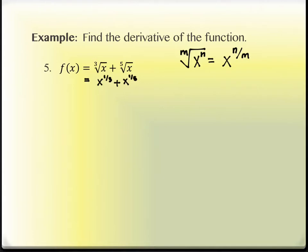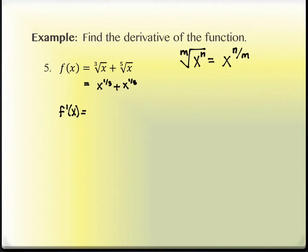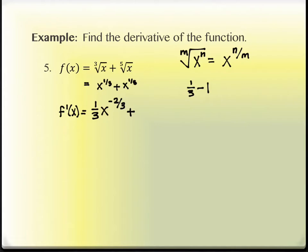We now have a form that works well for differentiation. The derivative of x to the one-third: bring down the one-third, then subtract one from the exponent. One-third minus one requires a common denominator — it gives negative two-thirds, not negative one-third. For x to the one-fifth: bring down the one-fifth, and one-fifth minus one gives negative four-fifths. So the derivative is one-third x to the negative two-thirds minus one-fifth x to the negative four-fifths.